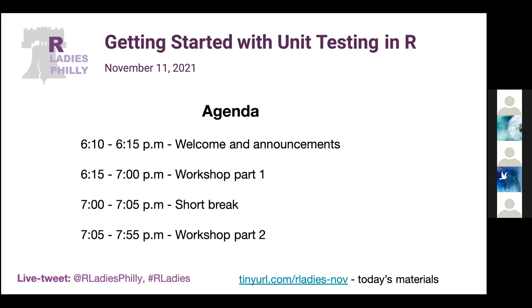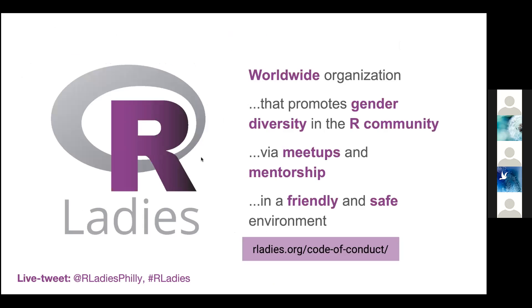If you want to tweet about the event, we always appreciate that — a little social media engagement is great. You can use hashtag R-Ladies for those things and tweet at us at R-Ladies Philly. R-Ladies is a worldwide organization with chapters all over the United States as well as all over the world. One of our main goals is to promote gender diversity in the R community in a safe and friendly environment. You can check out the R-Ladies Code of Conduct, which is available on the rladies.org website.